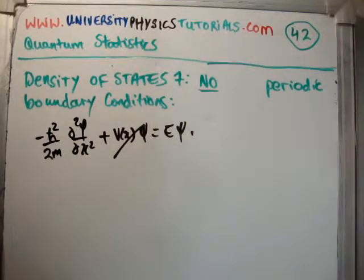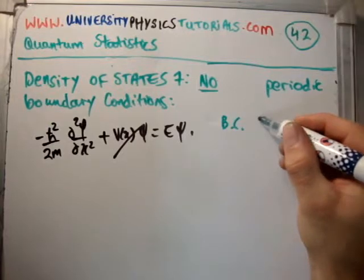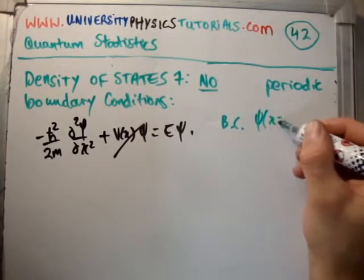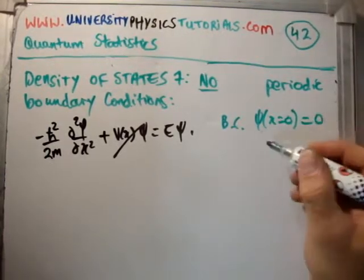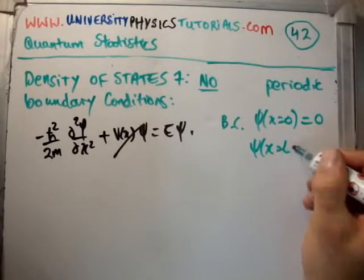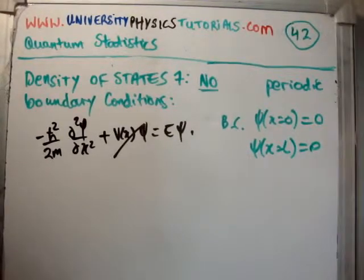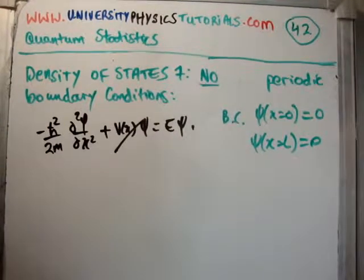The boundary conditions are that psi of x equals 0 is equal to 0 and psi of x equals L is equal to 0. So we're saying the wave function must come to 0 at the boundaries. So let's go ahead and solve this.